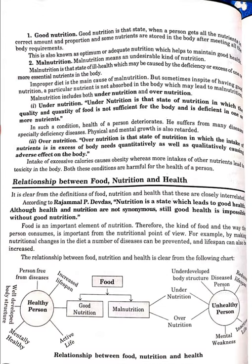Nutrition can be divided into two parts: good nutrition and malnutrition. Malnutrition is further subdivided into under-nutrition and over-nutrition. Good nutrition is that state when a person gets all the nutrients in the correct form and proportion, and some nutrients are stored in the body after meeting all body requirements. This is also known as optimum or adequate nutrition, which helps maintain good health.